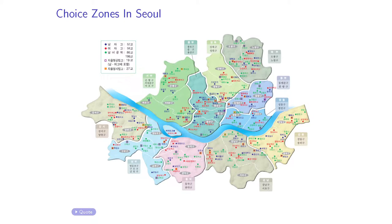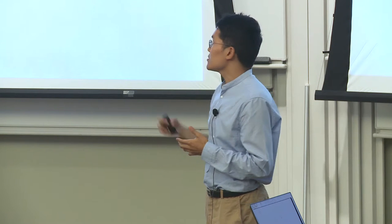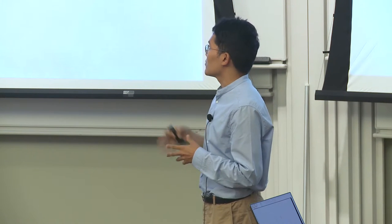For those unfamiliar with the Boston mechanism: in round zero, schools' priorities are determined, rank order lists are submitted, and random lotteries to break ties are drawn. In round one, the mechanism assigns students to their first-choice schools, using priorities and lotteries to break ties. Assigned students are removed — assignments are final. The same process repeats in subsequent rounds. Because the rank order list length is only six, the Seoul school choice mechanism ends in round six, and those unmatched at the end are unmatched students.